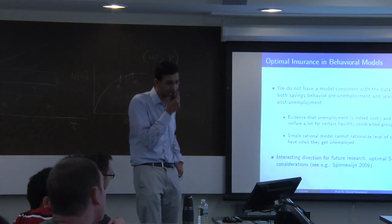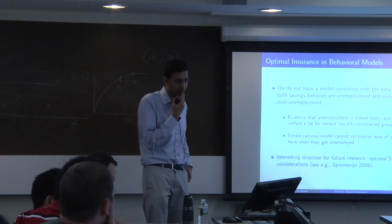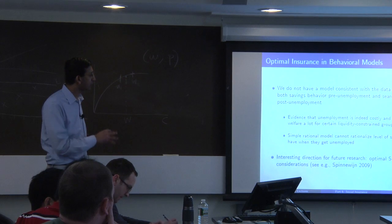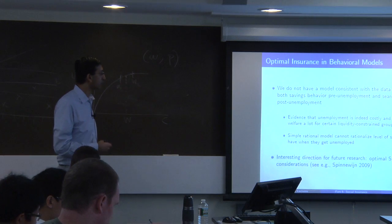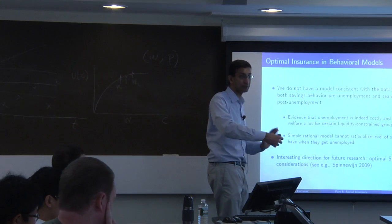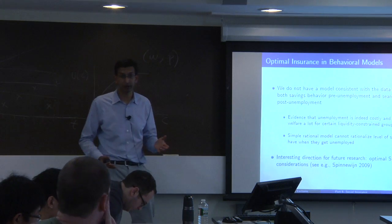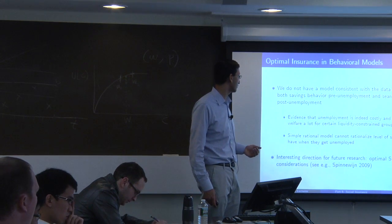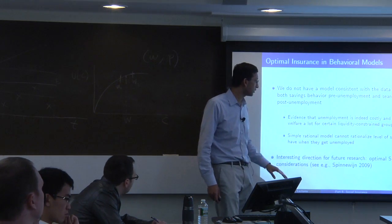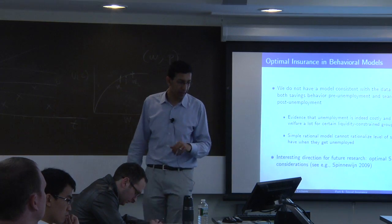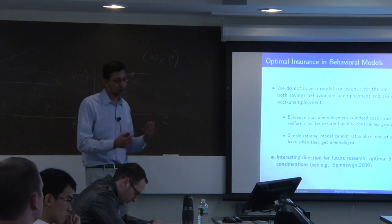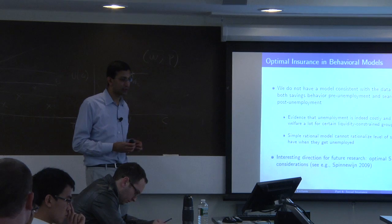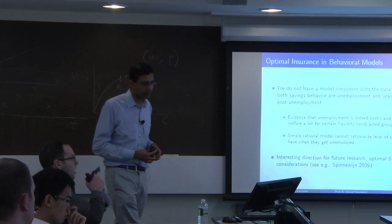The last thing to say on UI and the theory of social insurance is something we've touched on several times. We really don't have a model consistent with the data that can explain both savings behavior pre-unemployment—why people don't build up buffer stocks—and search behavior post-unemployment, where people are very sensitive to liquidity. We see evidence that unemployment is costly and that benefits can improve welfare a lot for liquidity-constrained groups, but a simple rational model can't rationalize the level of savings people have when they become unemployed. An interesting general direction for future research is optimal social insurance with behavioral considerations, of which related work is one example.